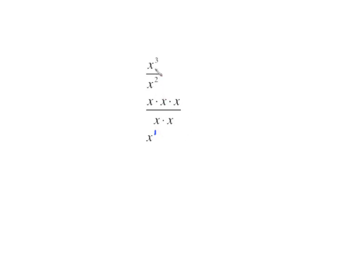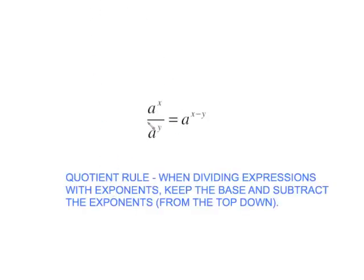Now take a look at this. We are dividing expressions with the common base. And what do we do with the exponents? We just subtracted 3 minus 2. And the reason it's subtract is that as you cancel, you are subtracting away common x's. This leads to the quotient rule. It says a to the x divided by a to the y is a to the x minus y.